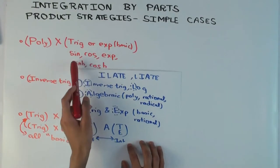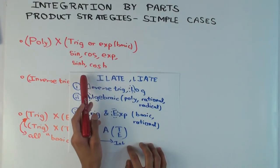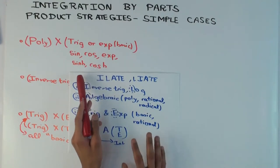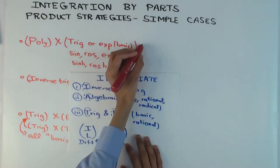What about these functions—sine, cosine, exponential, hyperbolic sine, hyperbolic cosine—when you integrate them, they remain of roughly the same type, right? So it makes sense now to differentiate the polynomial